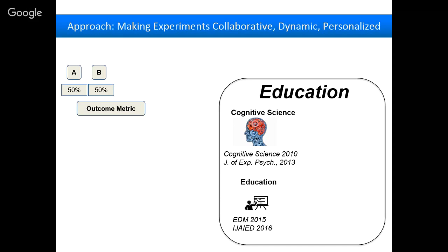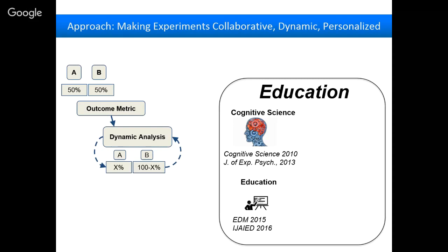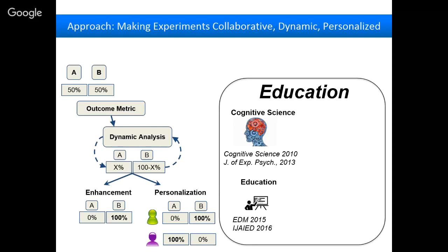To go beyond just doing experiments to actually improving a system, what I aim for is dynamic analysis. In real time, after ten students do a math problem or see an email, figure out which condition seems to be increasing learning and then adjust. So if the first ten students are assigned 50/50, the next ten might get 60/40 or 80/20 — over time we're using experiments to enhance the system. But we might also want to use experiments to discover how to personalize. If we build the infrastructure right, every experiment could be an engine for personalizing.